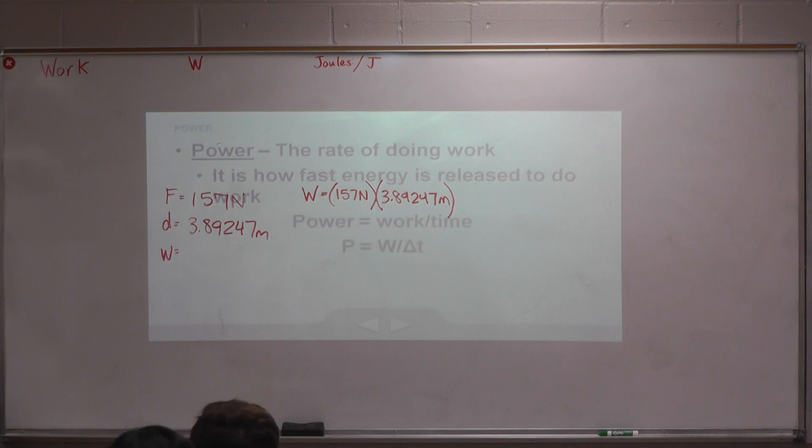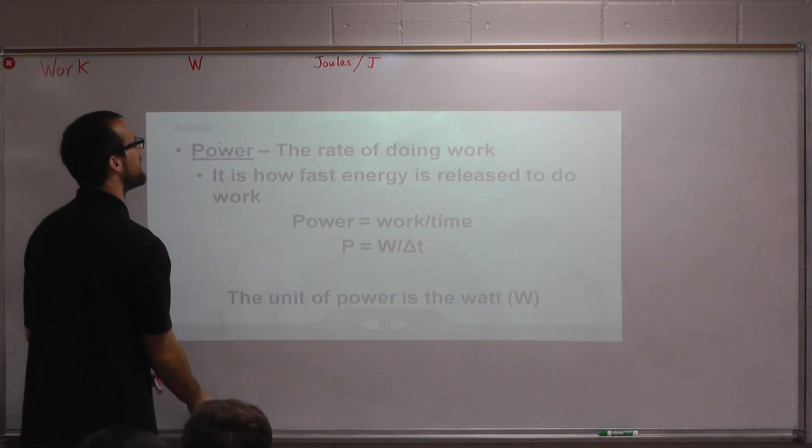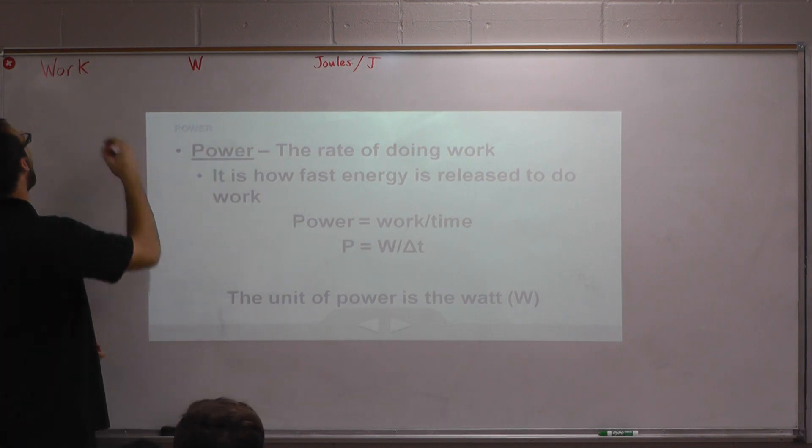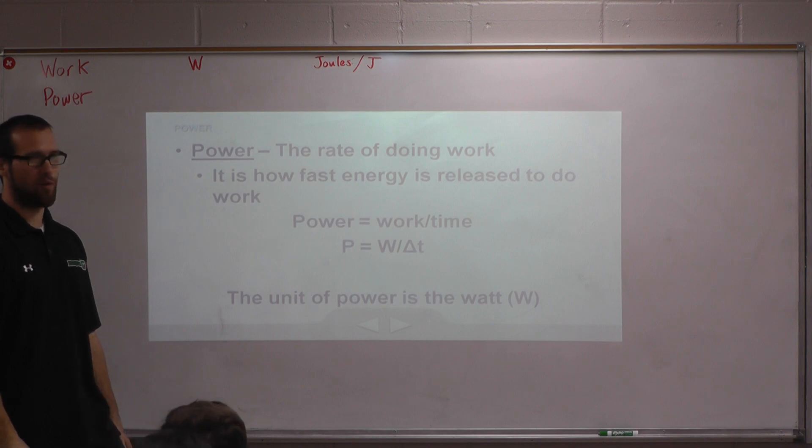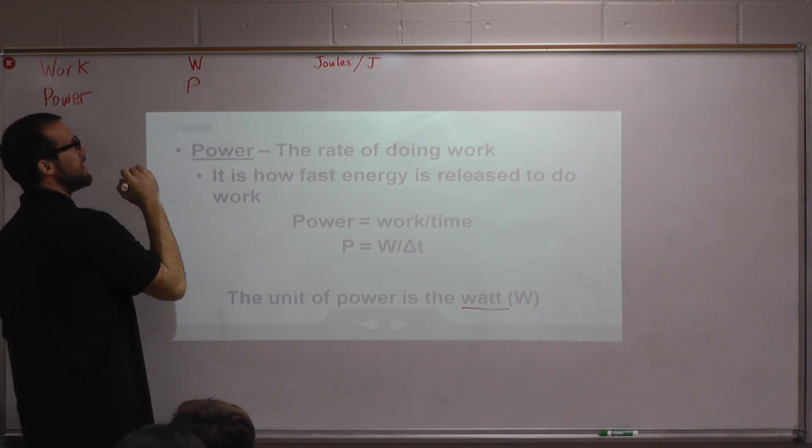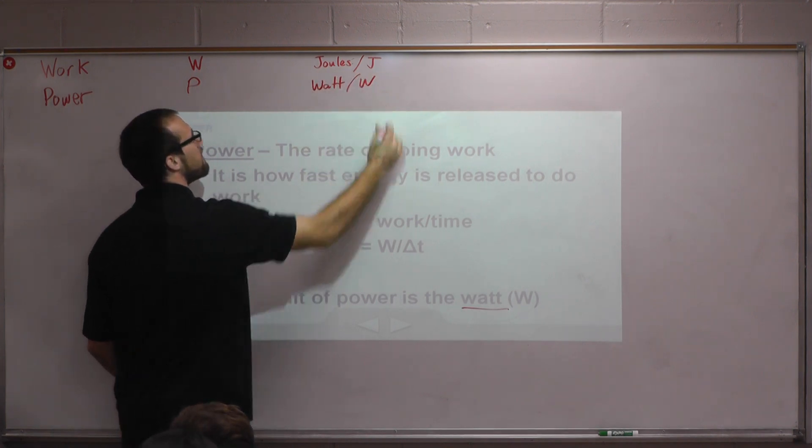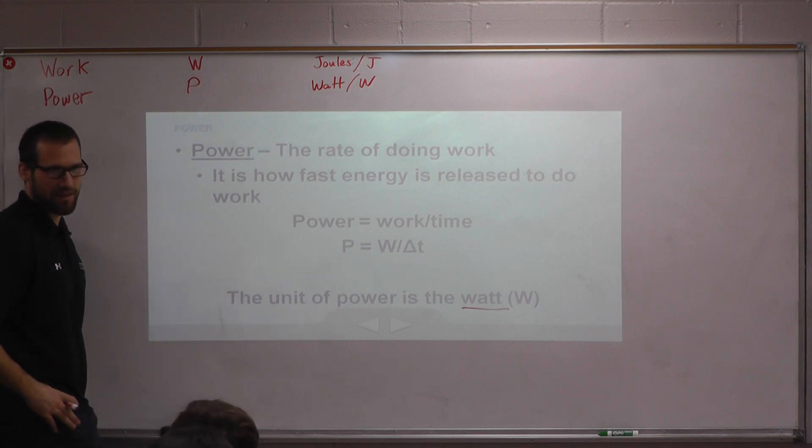One more variable here. Power. So we will add our second variable from this chapter. Power. And the unit for power is a watt. So this is where it's tricky. The symbol is P. The unit is W. A watt is a joule per second, which is really a kilogram times a meter per second squared times a meter per second. You should never forget the unit for power.